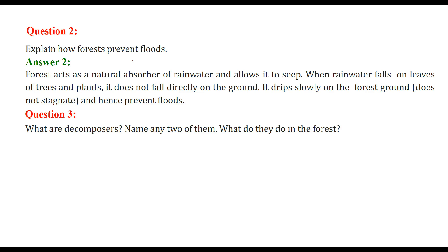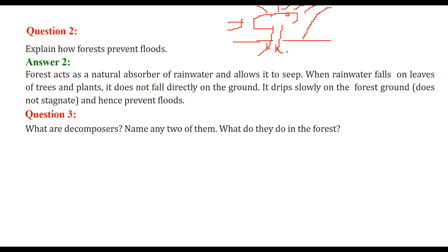Next question: explain how forests prevent floods. If this is a tree, this is soil, and these are roots. Forests are natural absorbers of rainwater. When rain falls on a tree, it doesn't fall directly to the soil — instead it drips down slowly. If there were no tree, water would flow away, but because the tree is there, it drips and increases the groundwater level.